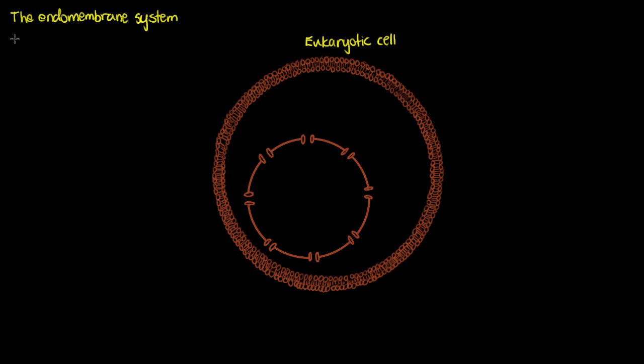So we have our eukaryotic cell here, and we're going to write down that the endomembrane system is composed of membranous organelles. But the organelles that are in this system have to be working closely together. So they're either joined in some way or arise from the vesicles that transport various things around our cells.